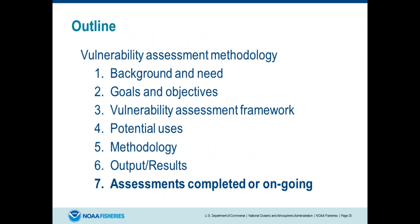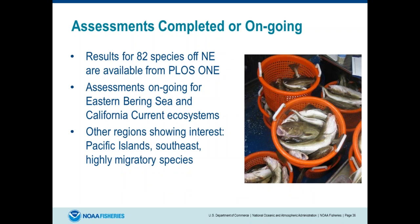Rounding out to the end — assessments completed or ongoing. We ran an analysis on 82 species in the Northeast, and that is available in PLOS One. Please go to the supplemental information, which has the species narratives — two to three pages per species — which I think are the key results. We have ongoing assessments for the eastern Bering Sea and the California Current ecosystems, and other NMFS regions are showing interest, so we expect one or two other areas should start up soon.